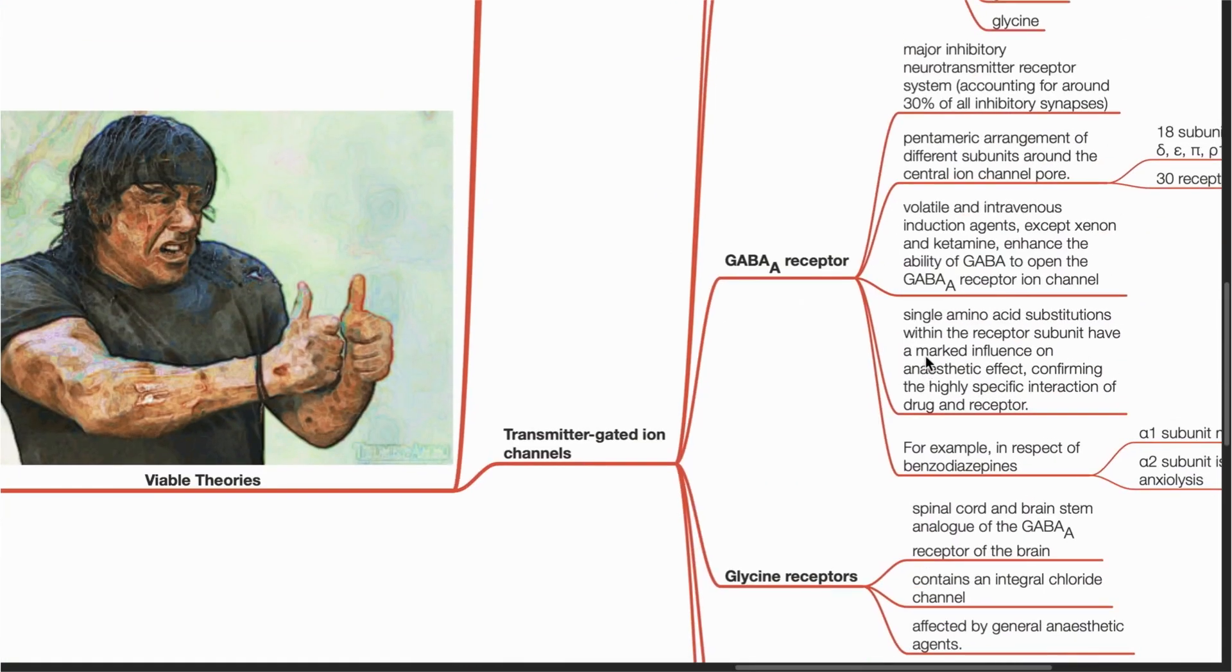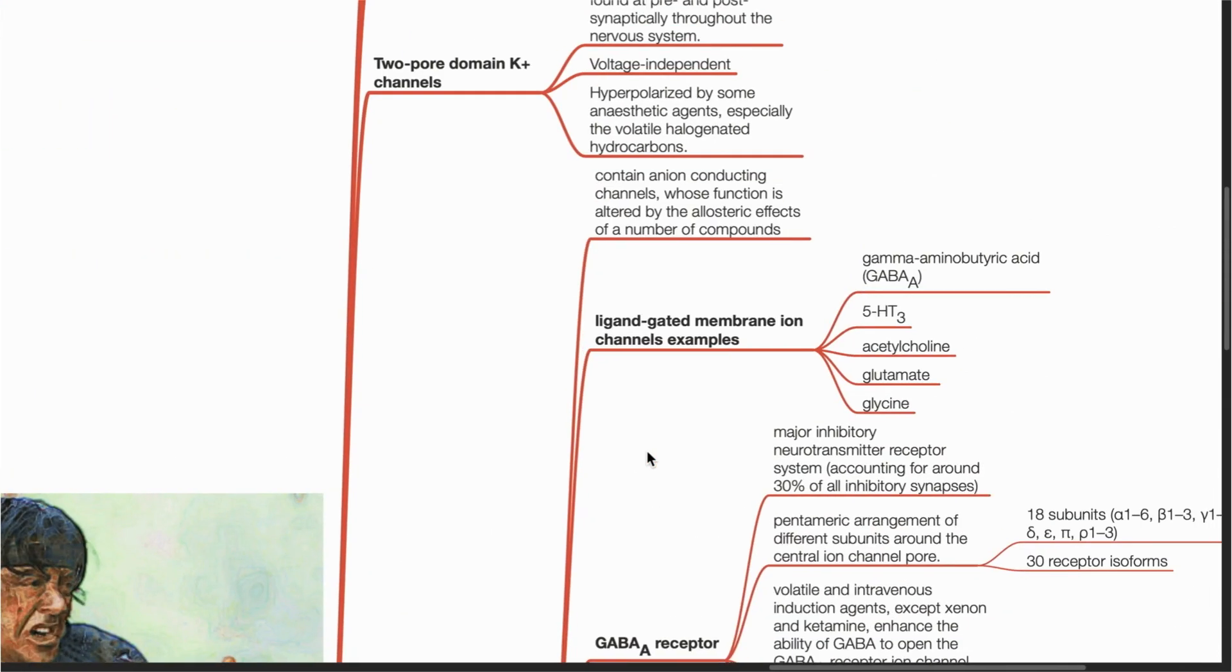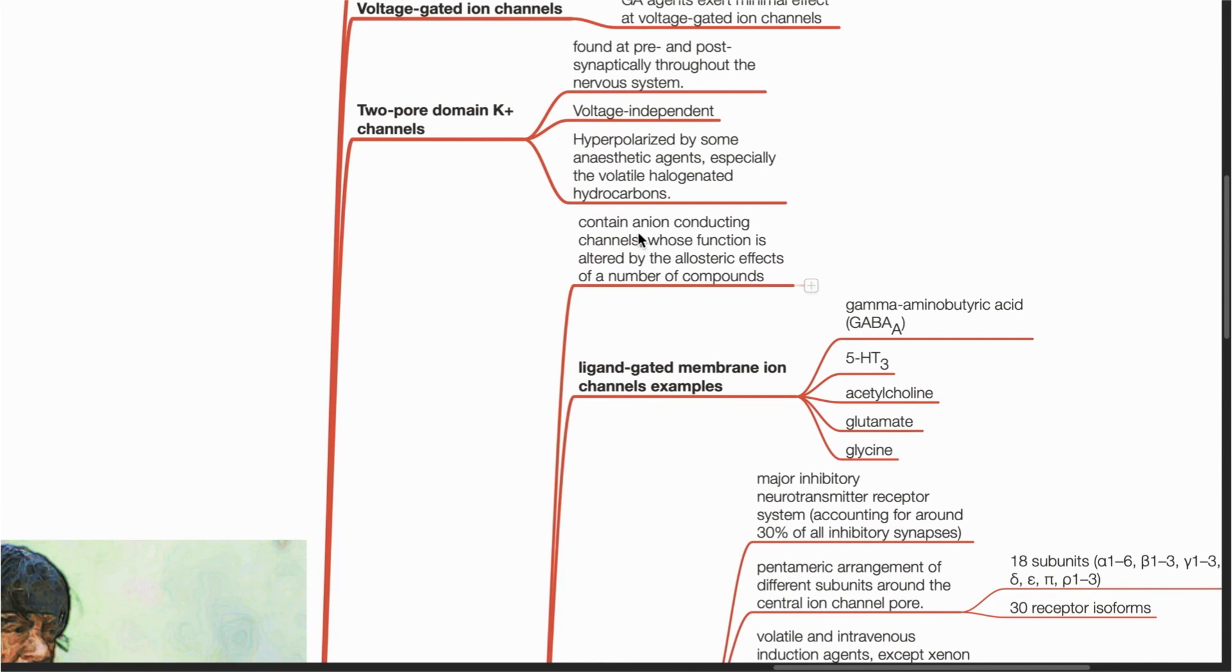Regarding transmitter-gated ion channels, they contain ion-conducting channels whose function is altered by the allosteric effects of a number of compounds.